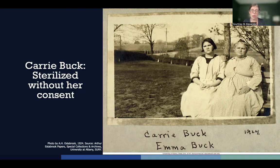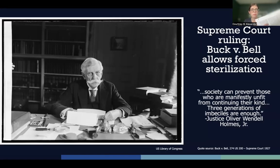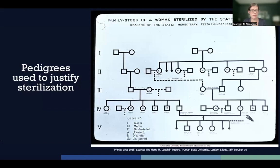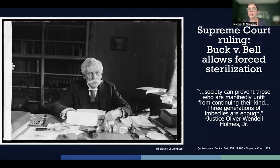Carrie was sterilized to prevent passing along her so-called feeble-mindedness, which she, her mother, and her daughter were all declared to exhibit. In 1927, the 8-1 ruling in Buck v. Bell established the right of the state to sterilize people deemed unfit. Supreme Court Justice Oliver Wendell Holmes, writing an opinion representing the majority of the justices, argued that the interest of the state to improve the gene pool superseded an individual's right to maintain bodily integrity. He wrote that society can prevent those who are manifestly unfit from continuing their kinds — for instance, three generations of imbeciles are enough.